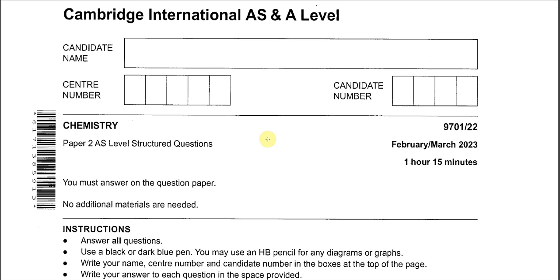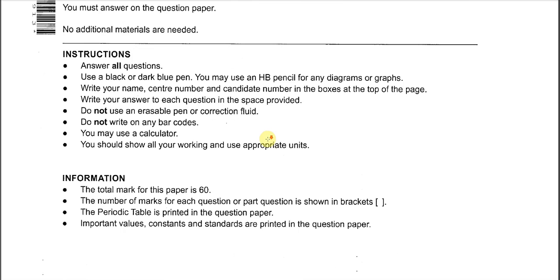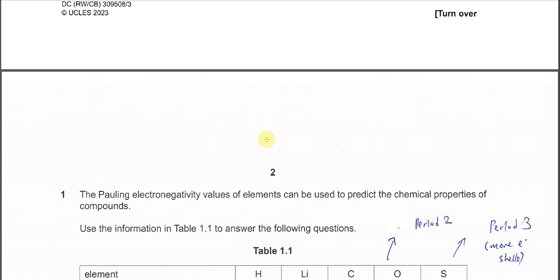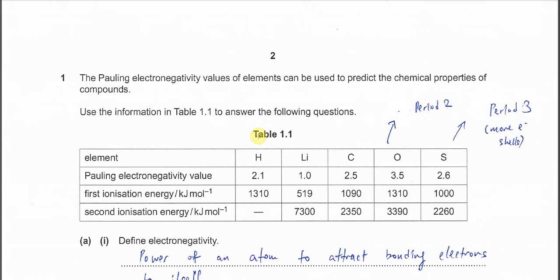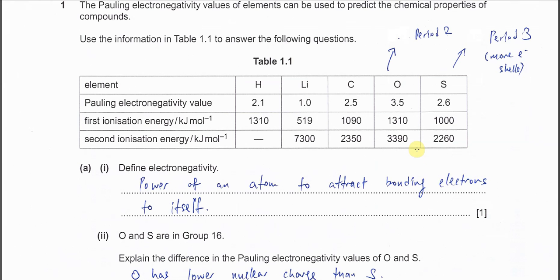February-March 2023 Paper 2, Question 1. In Table 1.1, the electronegativity values of hydrogen, lithium, carbon, oxygen, and sulfur are given. Part A(i): Define electronegativity. The power of an atom to attract bonding electrons to itself.